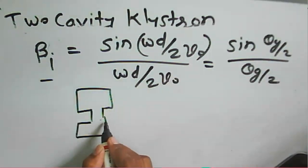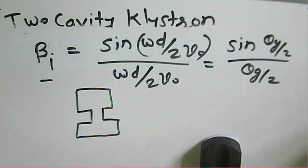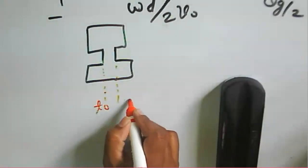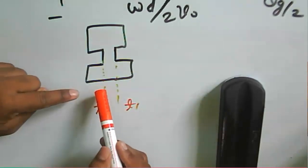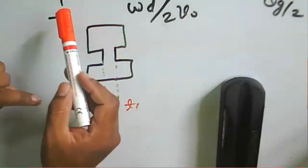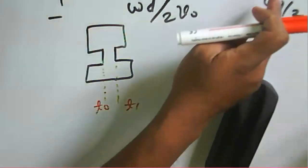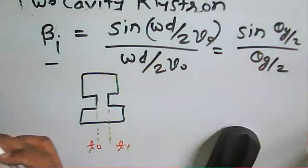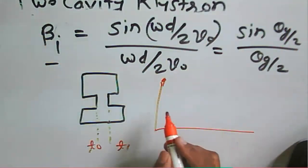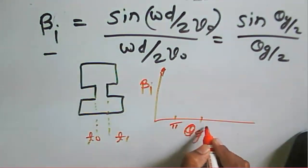Considering the buncher cavity, electrons enter at time t0 and exit at time t1. Based on the beam coupling coefficient, we observe that it depends on the transit gap angle, theta_g by 2. If we draw a graph of the beam coupling coefficient beta_i with respect to theta_g, we mark values at pi, 2*pi, 3*pi, 4*pi and so on.